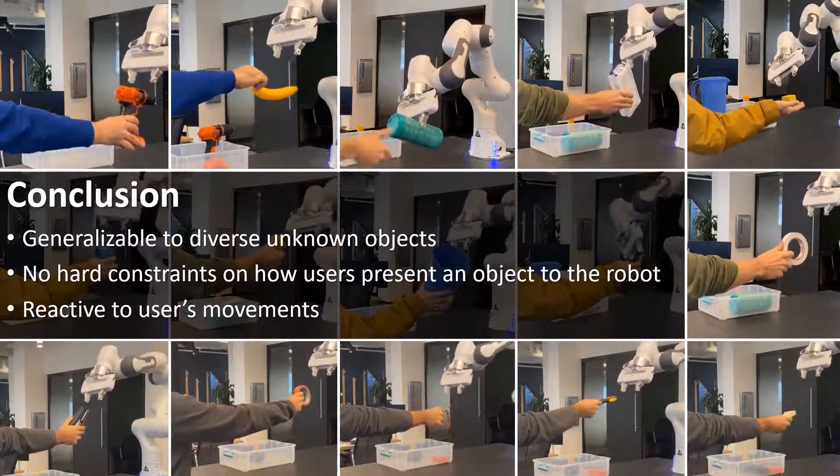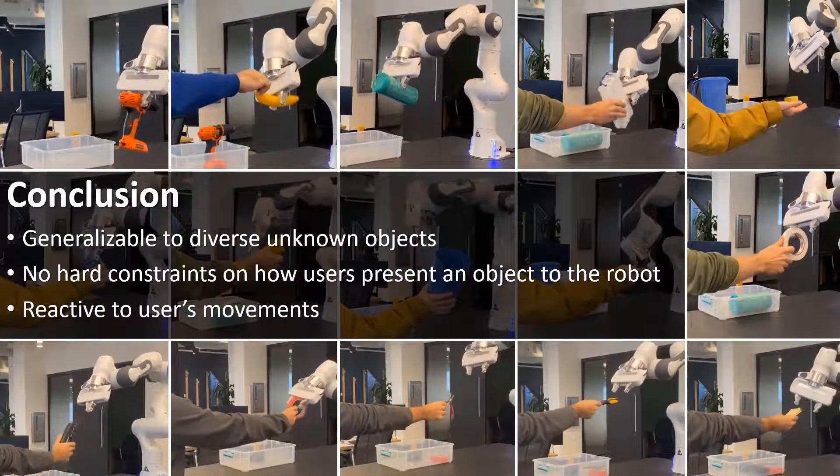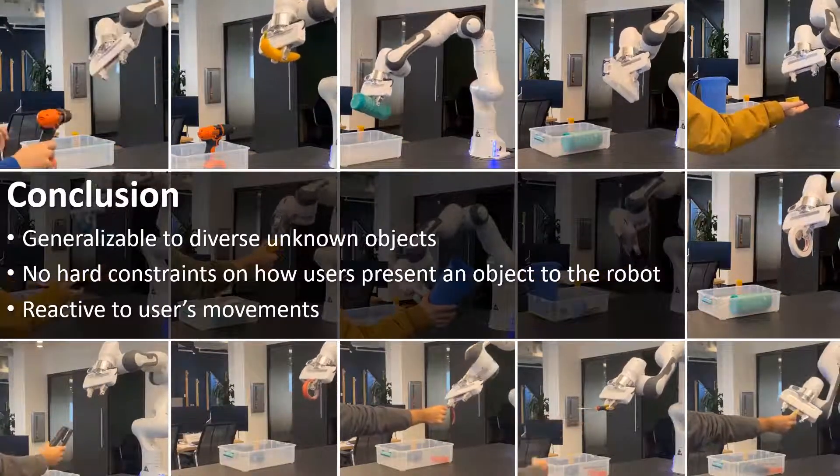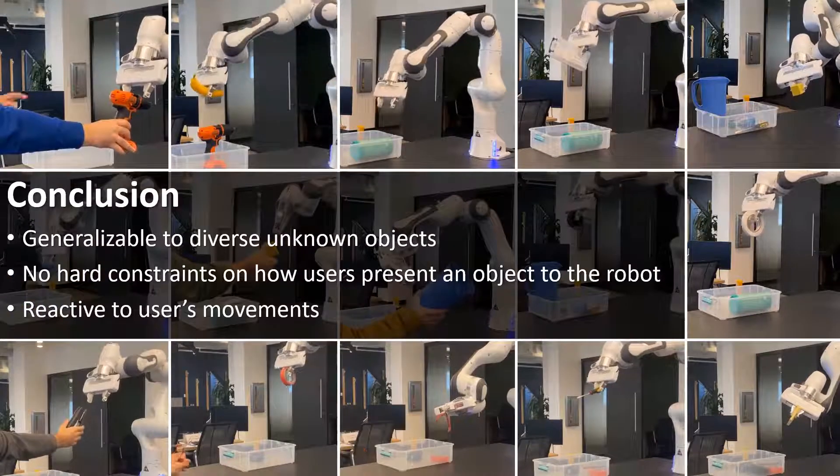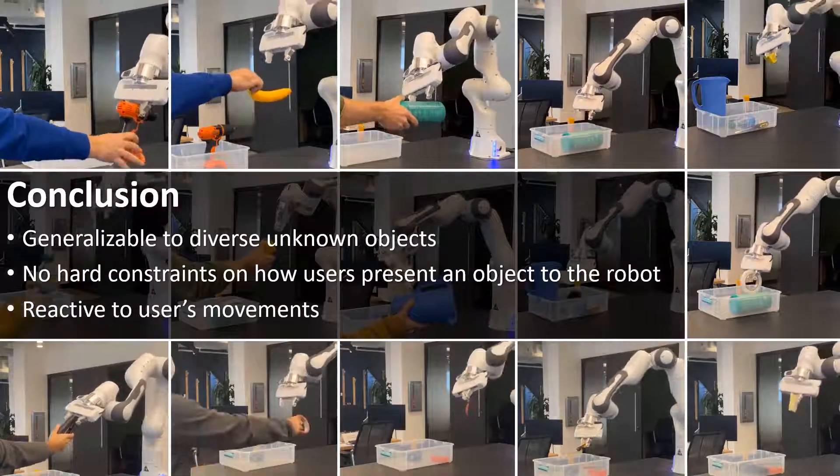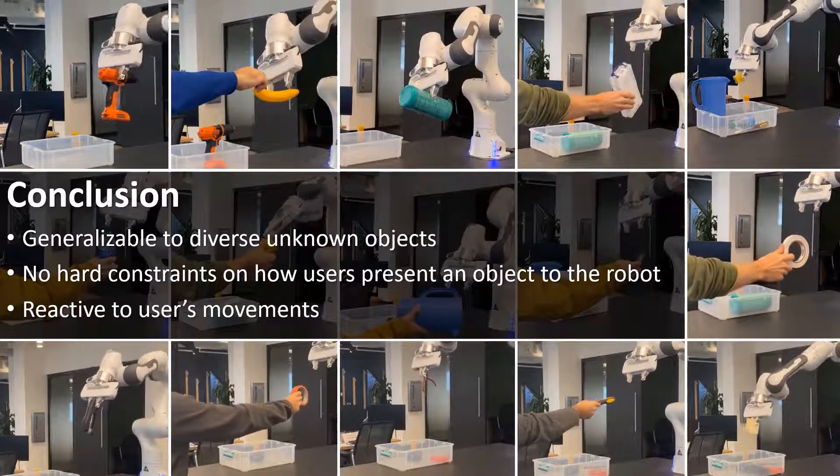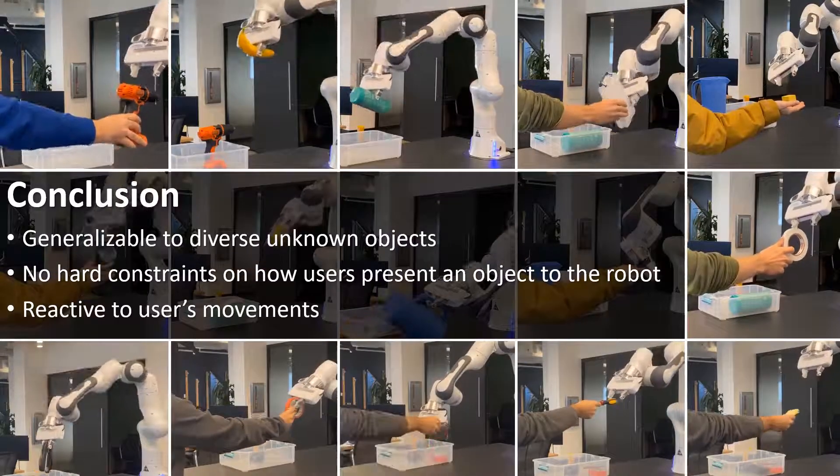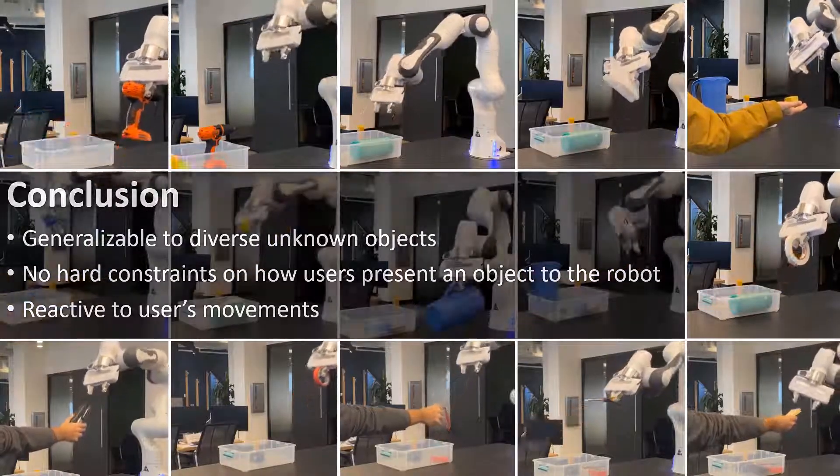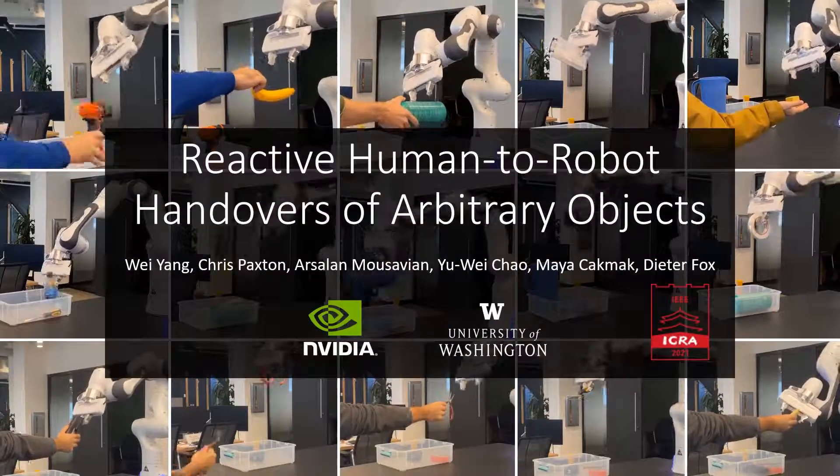In conclusion, we present a human-to-robot handover system that is generalizable to diverse unknown objects. There is no hard constraint on how users might present an object to the robot and the system is reactive to our users' movement. Thank you very much for your attention.